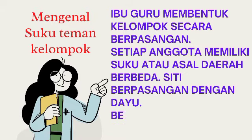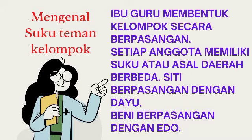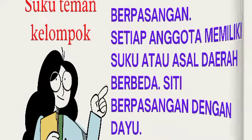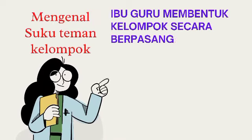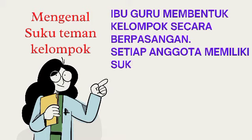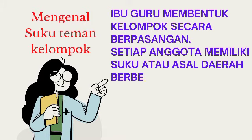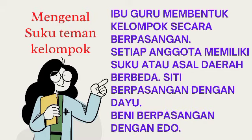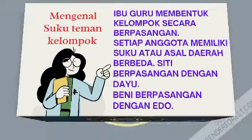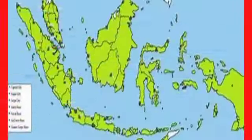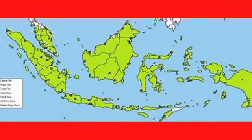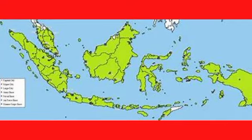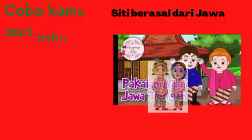Terus halaman berikutnya, yaitu halaman 66, tentang ibu guru membentuk kelompok secara berpasangan. Setiap anggota memiliki suku atau asal daerah yang berbeda. Siti berpasangan dengan Dayu, Beni berpasangan dengan Edo. Coba kamu cari tahu dari mana asal daerah Siti, Dayu, Beni, dan Edo. Anak-anak, kita tahu Indonesia terdiri dari berbagai suku dan berbagai pulau — ada dari pulau Sumatera, Jawa, Bali, Kalimantan, Papua, Sulawesi. Setiap pulau tersebut dihuni oleh berbagai suku.